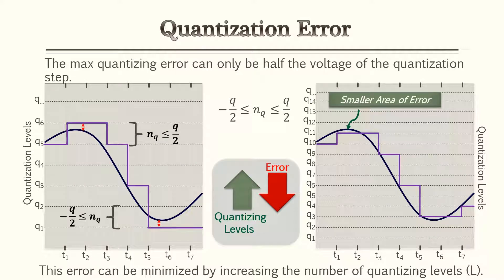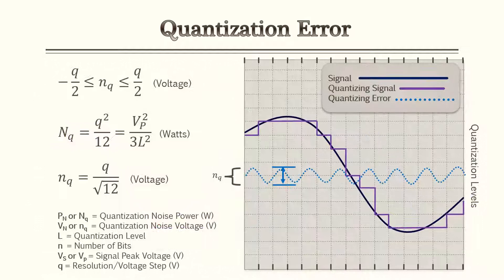Since quantization error is due to the rounding process, the maximum quantization error can only be half the voltage of the quantization step. Looking at the illustrations, you can see the quantization signal is either rounding up or down compared to the input signal. To minimize this error, you can increase the number of quantization levels — the more levels you have, the smaller the error becomes. The difference between the input signal and the quantization signal gives us a separate quantization error signal.